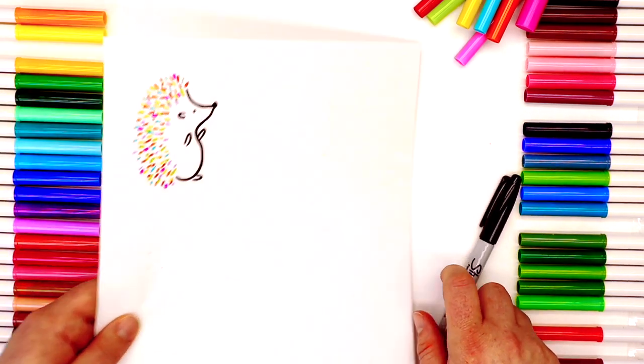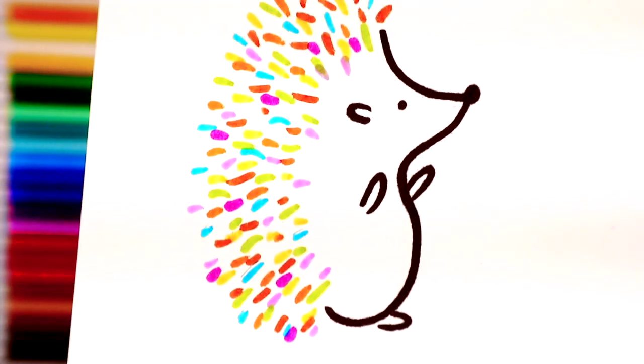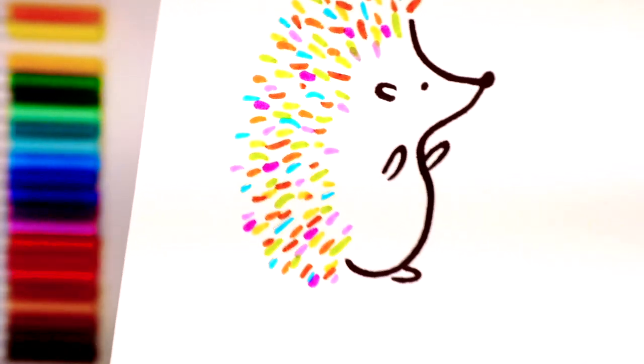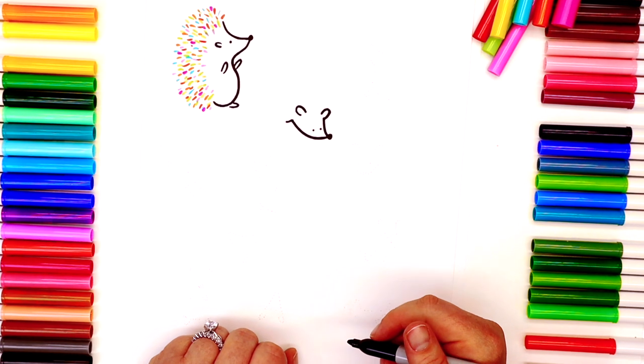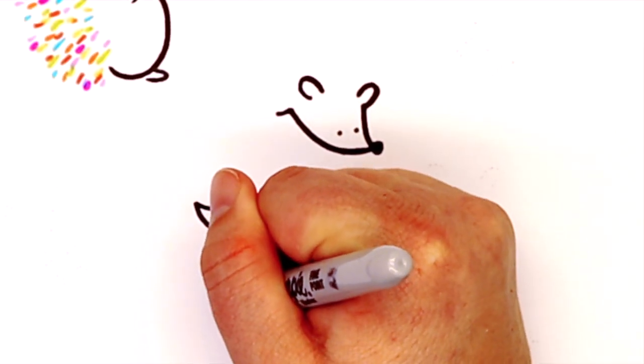So now what we're going to do is I'm going to show you how to draw all the different bodies and heads, and then we'll have fun with our rainbow colors next. Go ahead and give this first face a try on your own. It's pretty easy shapes. We're going to be using a lot of the same ones over and over.